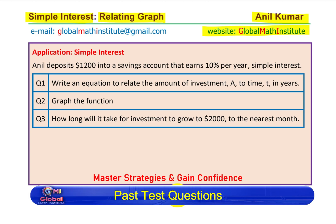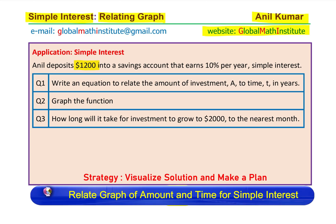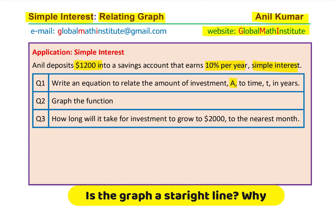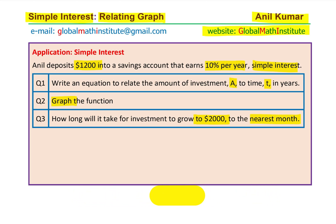The question here is: Anil deposits $1200 into a savings account that earns 10% per year simple interest. Question 1: write an equation to relate the amount of investment A to the time T in years. Graph the function, and part 3 is, how long will it take for the investment to grow to $2000, to the nearest month. You can always pause the video, answer the question, and then look into my suggestions.